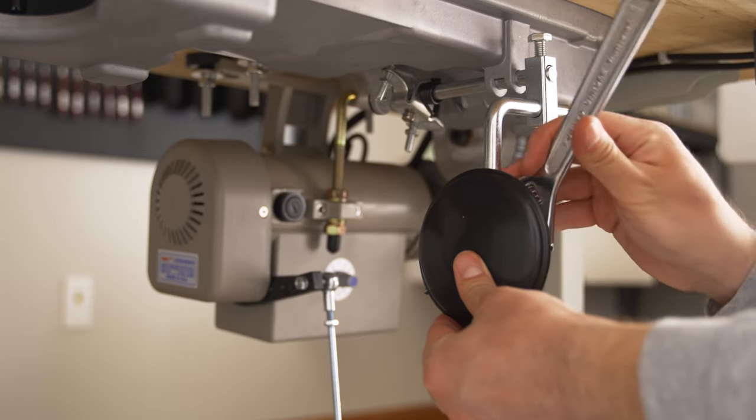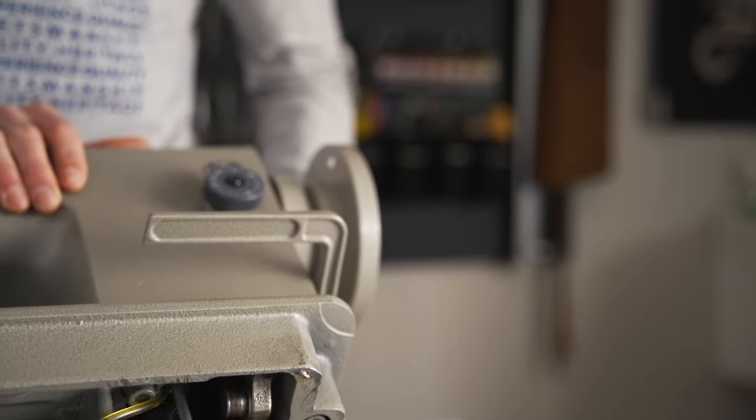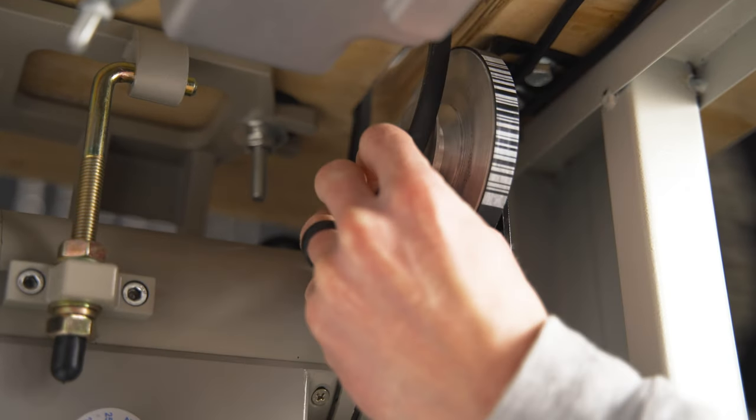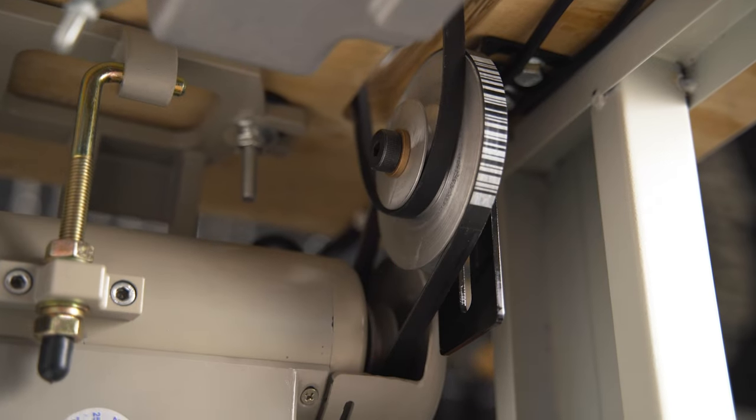To install the belt, tilt the machine back and slide the belt over the flywheel and onto the speed reducer pulley. Then pull the machine forward.